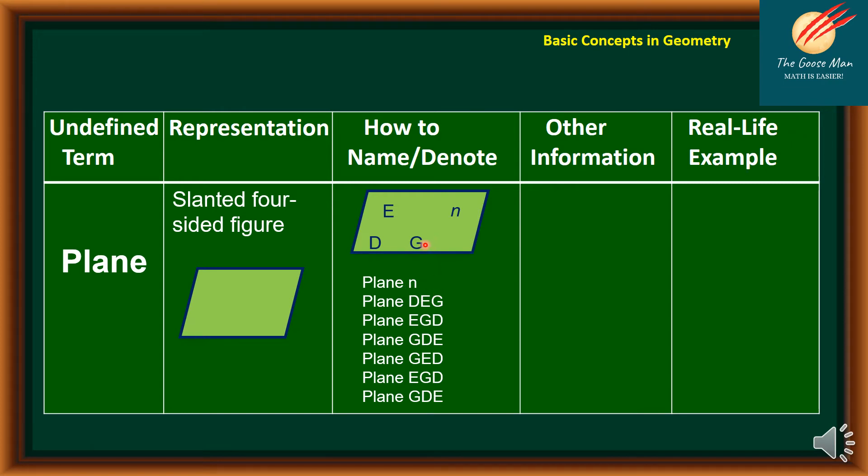However, if we will name plane using three capital letters, we should have at least three points. And take note, it must be in succession. So we have actually plane DEG, plane EGD, we have also plane GDE.